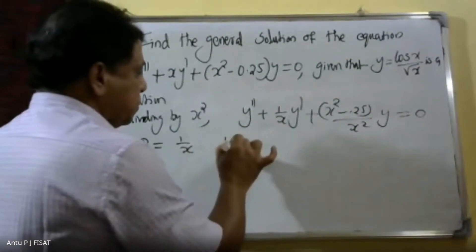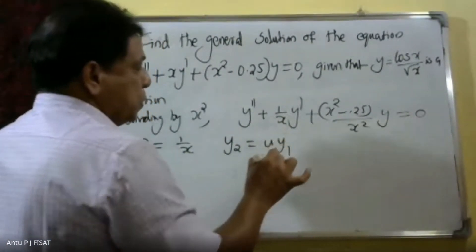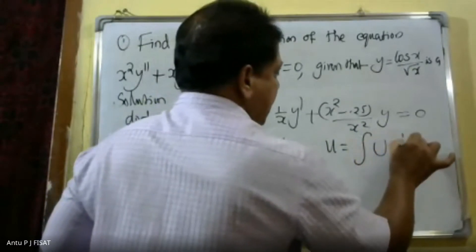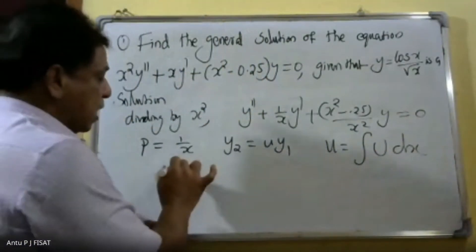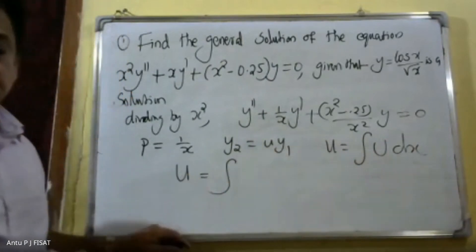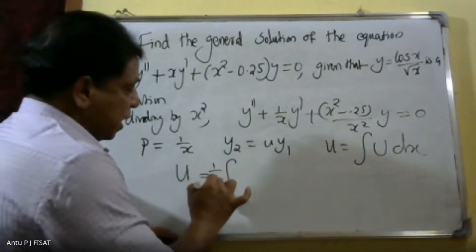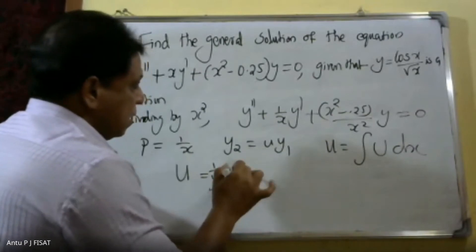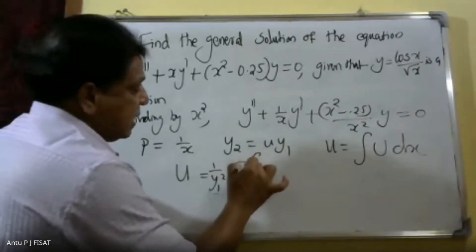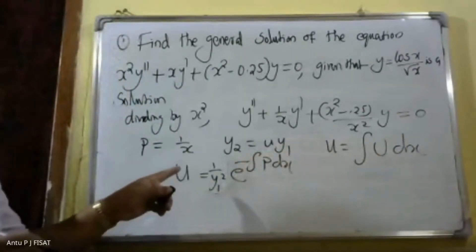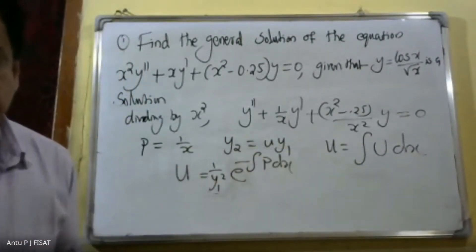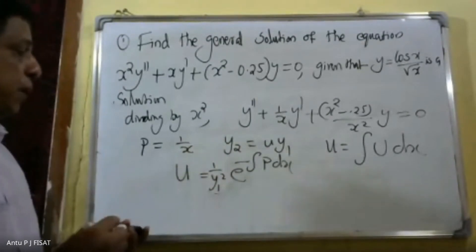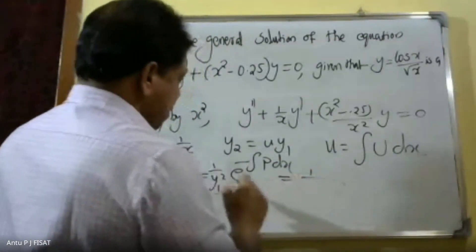Using the reduction of order formula: y₂ = u·y₁, where u = ∫[e^(-∫P dx) / y₁²] dx.